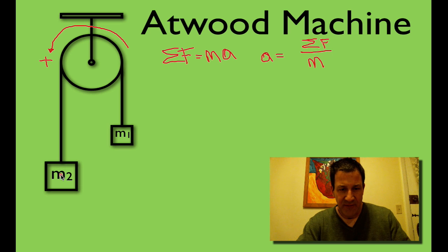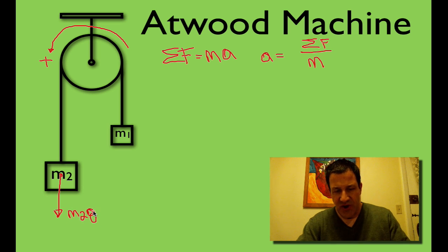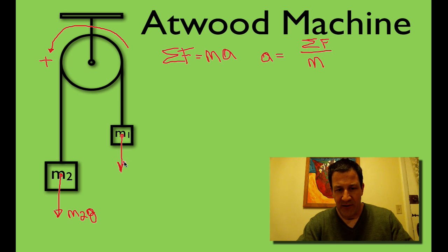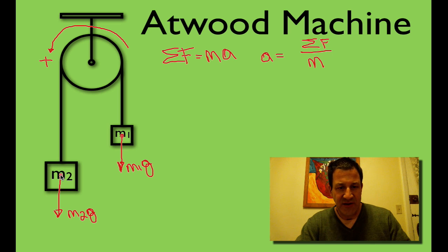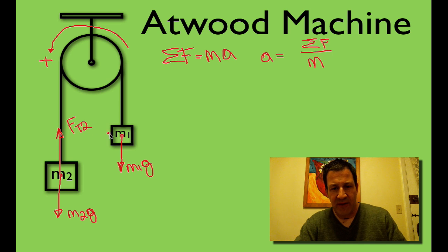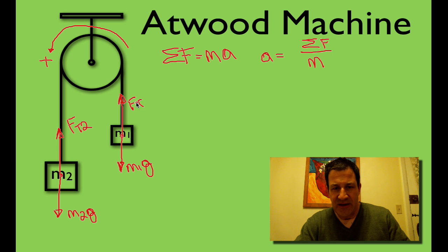M2 has mass and therefore has weight, and its weight force M2G points downwards. For M1 we have the same thing — it also points down — but we designate it M1G because they're different masses. The acceleration due to gravity is the same, but the masses are different. Because they're hanging by a string, there's a tension force for M2 pointing upwards, which we'll call FT2, and a tension force for M1 pointing upwards, which we'll call FT1.